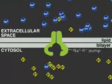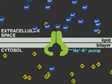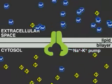Animal cells use a membrane pump, called the sodium-potassium pump, to maintain these ion gradients.